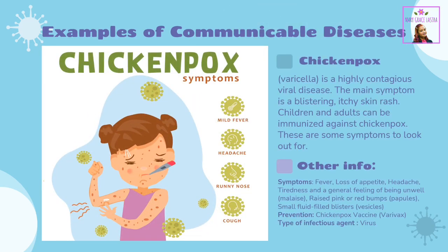Chickenpox, or varicella, is a highly contagious viral disease. The main symptom is a blistering, itchy skin rash. Children and adults can be immunized against chickenpox. Symptoms include fever, loss of appetite, headache, tiredness, and a general feeling of being unwell, malaise, raised pink or red bumps (papules), and small fluid-filled blisters (vesicles). Prevention: Chickenpox vaccine, Varivax. Type of infectious agent: Virus.